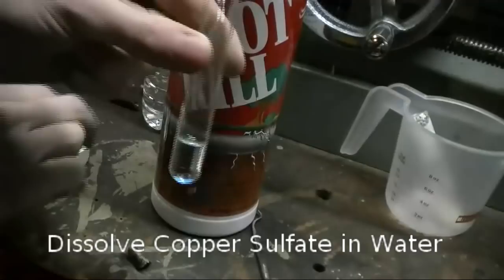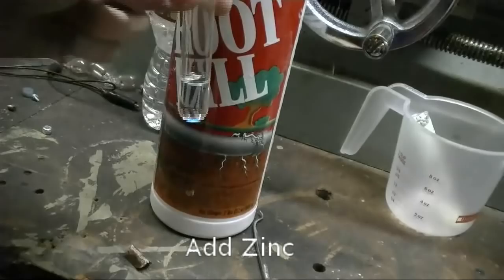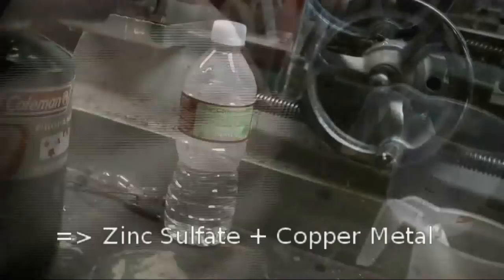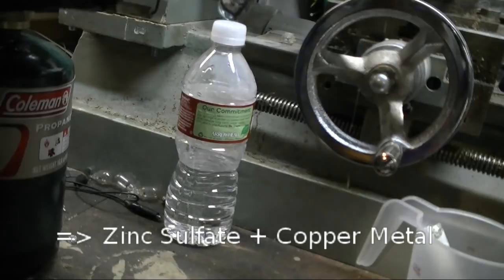I ground the copper surface off of a penny, a newer penny, to get to the zinc, because we're trying to make zinc sulfate. You can buy zinc sulfate from the store, they use it as a roof demoss agent.